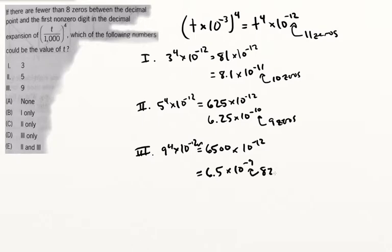However, just be careful, because what's the question asking for? Fewer than 8 zeros between the decimal point and the first non-zero digit. The lowest we're going to get is 8 zeros itself, so that's not fewer than 8 zeros. So our answer, in fact, is going to be A, none.